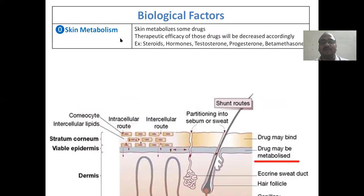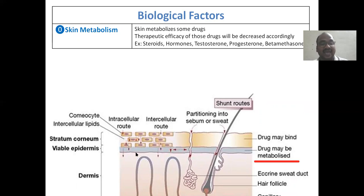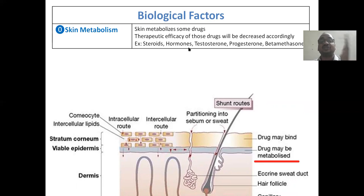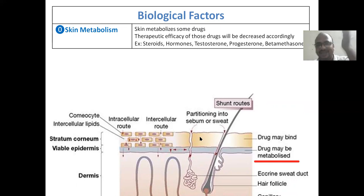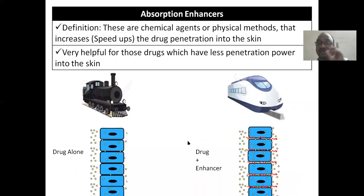Skin metabolism: drugs may be metabolized within the skin layer itself. Steroids and hormones such as testosterone and progesterone are metabolized in the skin, so very less amount of the drug actually enters the blood circulation.